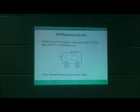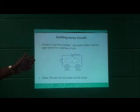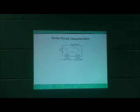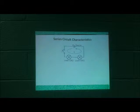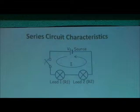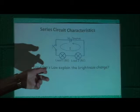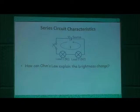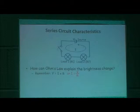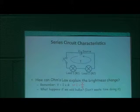Students break into groups of three or four and build the circuit themselves — first with an open switch, then closing it to observe the bulbs. To explain what happened, we label the loads R1 and R2. When two loads are in series, the resistances add. Since current equals voltage over resistance, increasing resistance means less current flows, so the bulbs don't shine as brightly.